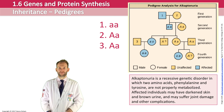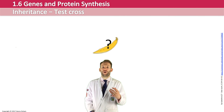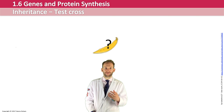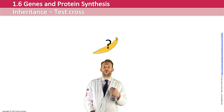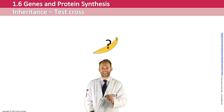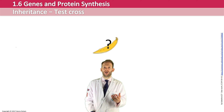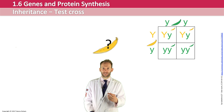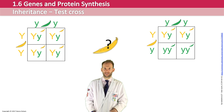Another thing to know is the test cross, used when you don't know a parent's genotype. For example, a yellow pea seed could be either homozygous dominant (big Y big Y) or heterozygous (big Y little y) — you can't tell from its phenotype alone. To find out, you cross it with something of known genotype, most easily homozygous recessive — a green pea. If any green offspring are produced, the original yellow parent must have been heterozygous. If no green offspring appear, it was homozygous dominant. This is how we use a test cross to determine unknown genotypes.